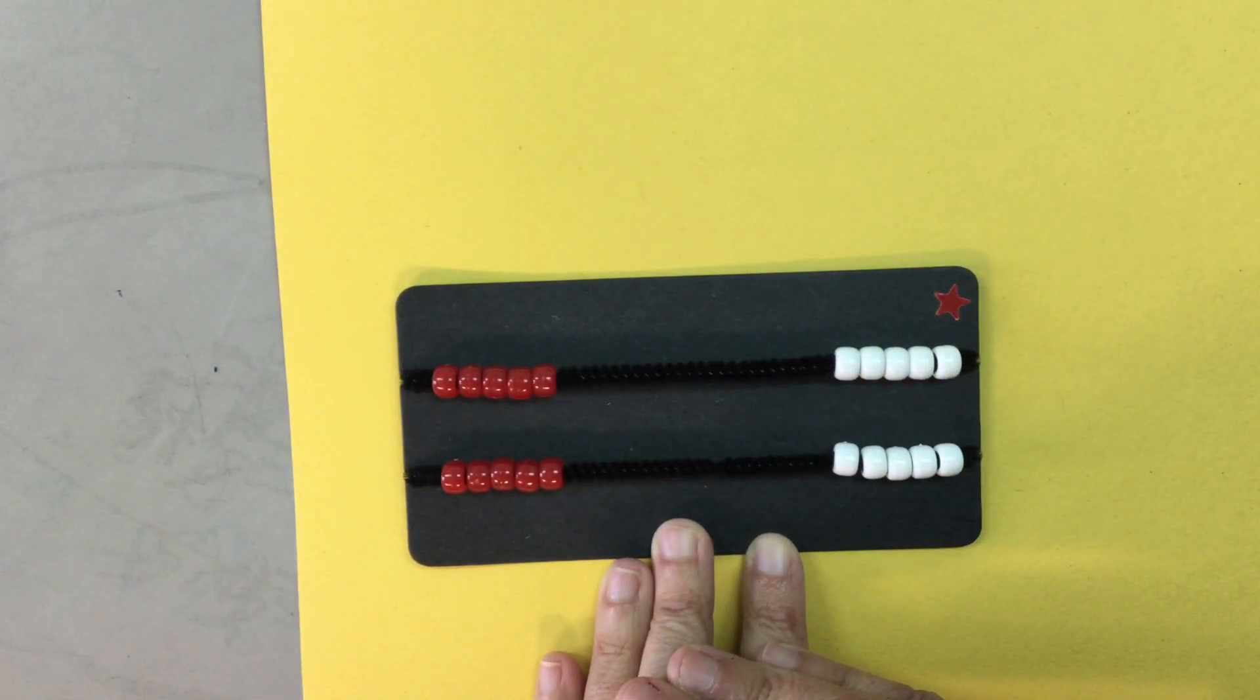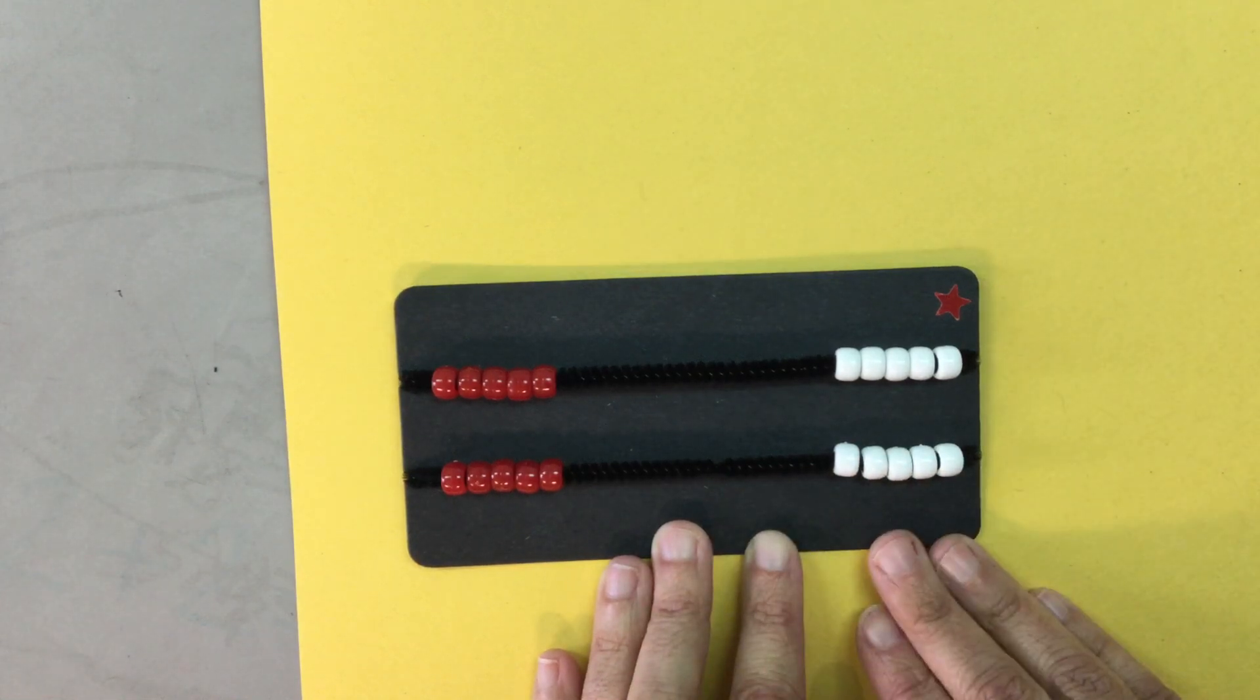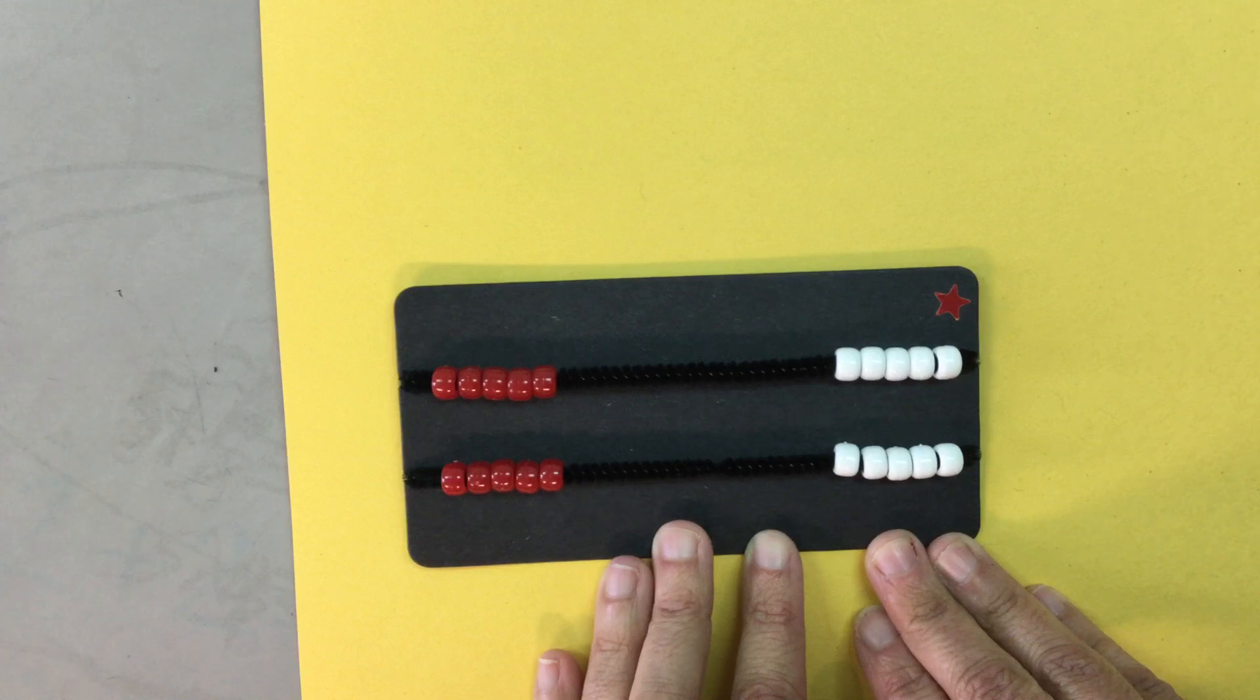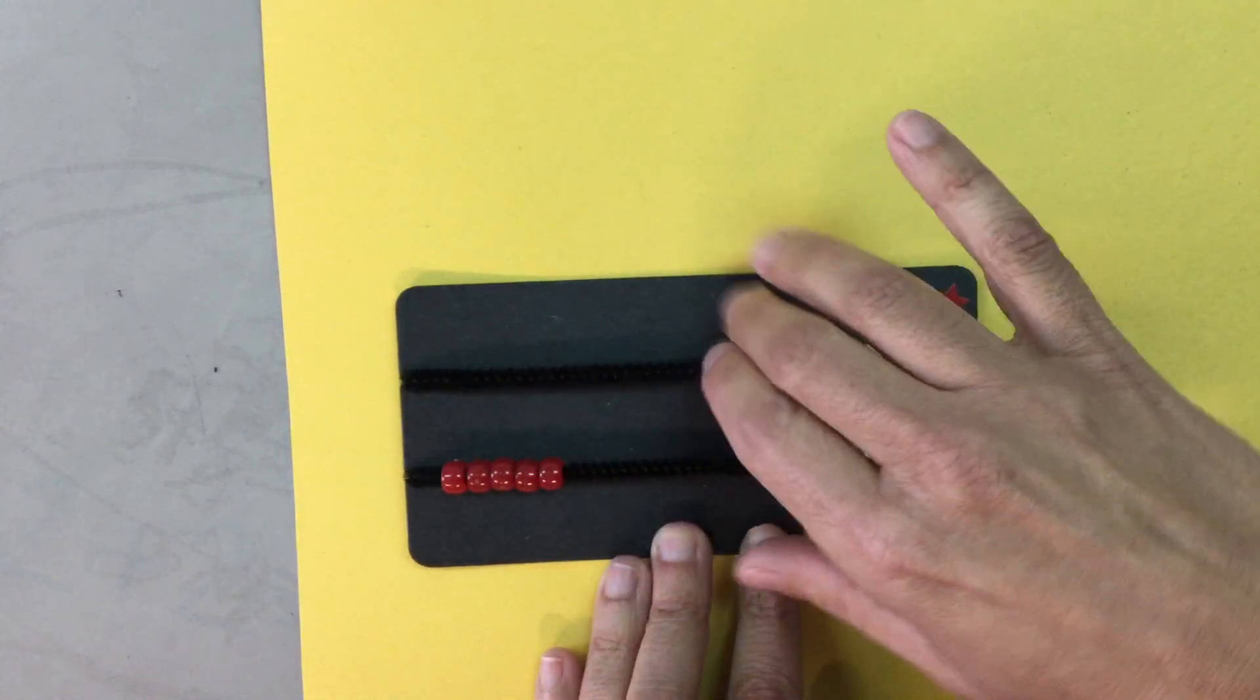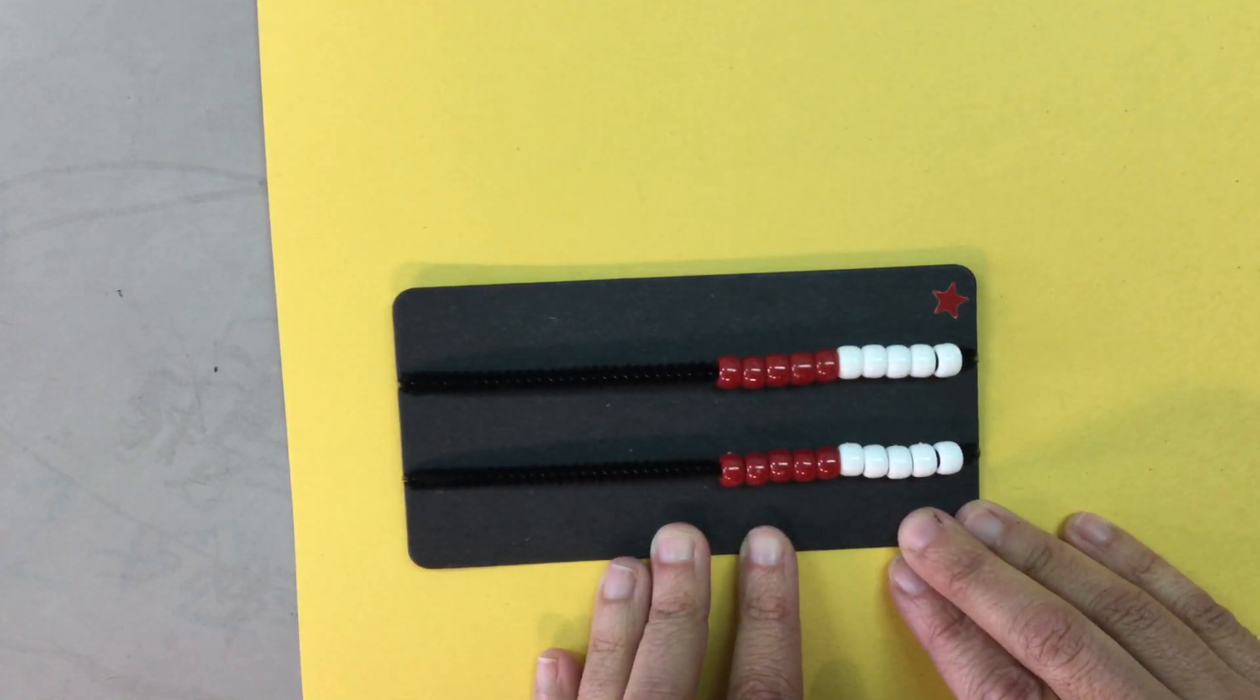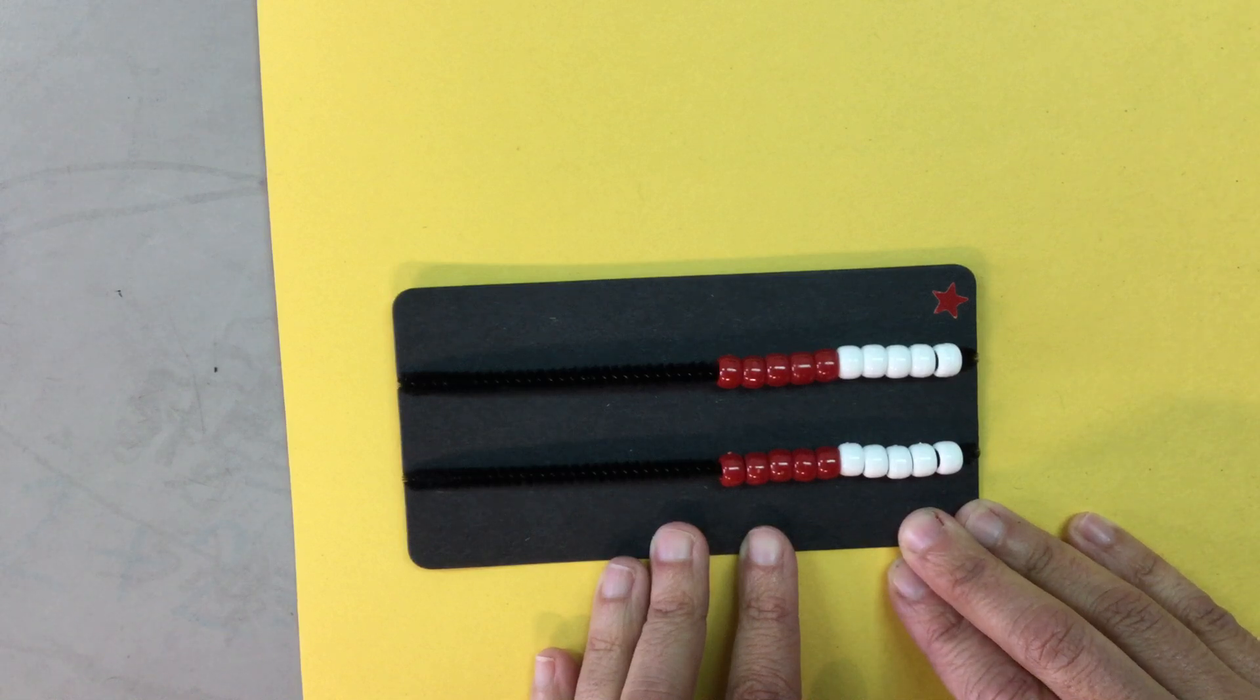The number rack is such a great tool because it helps us use our friendly numbers of five and ten. And friendly numbers are the numbers that are easier for us to skip count, add, and subtract with. So when I use the number rack, my goal is to learn to use it without counting by ones. Instead, I want to move or count the beads in groups.